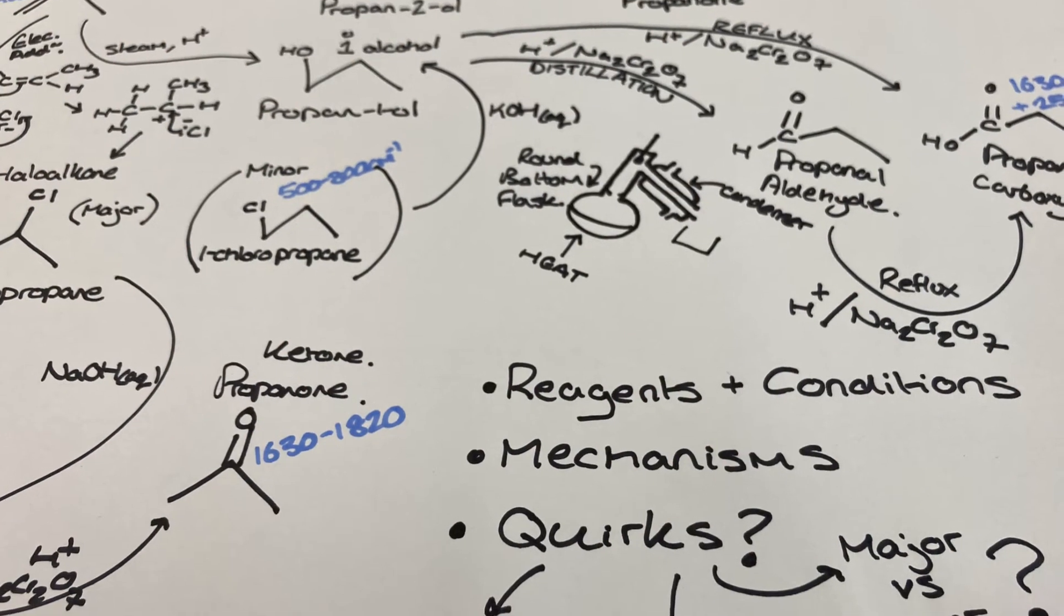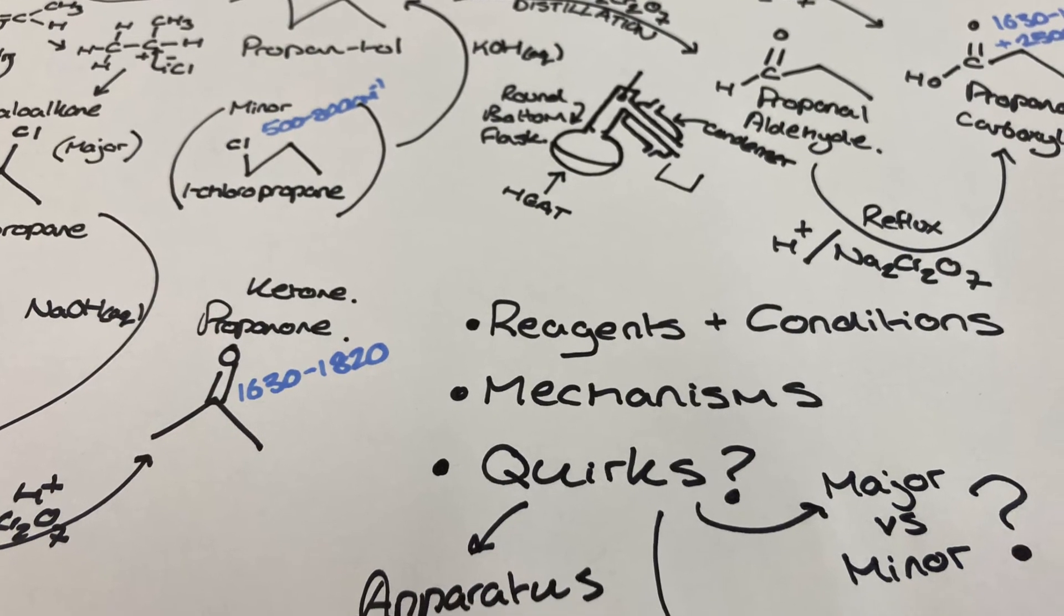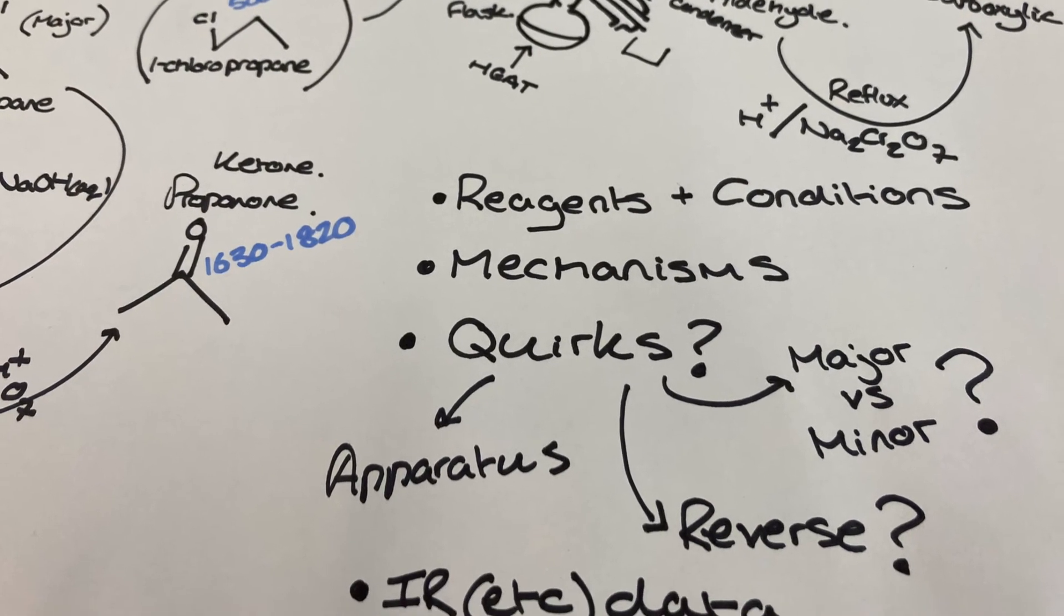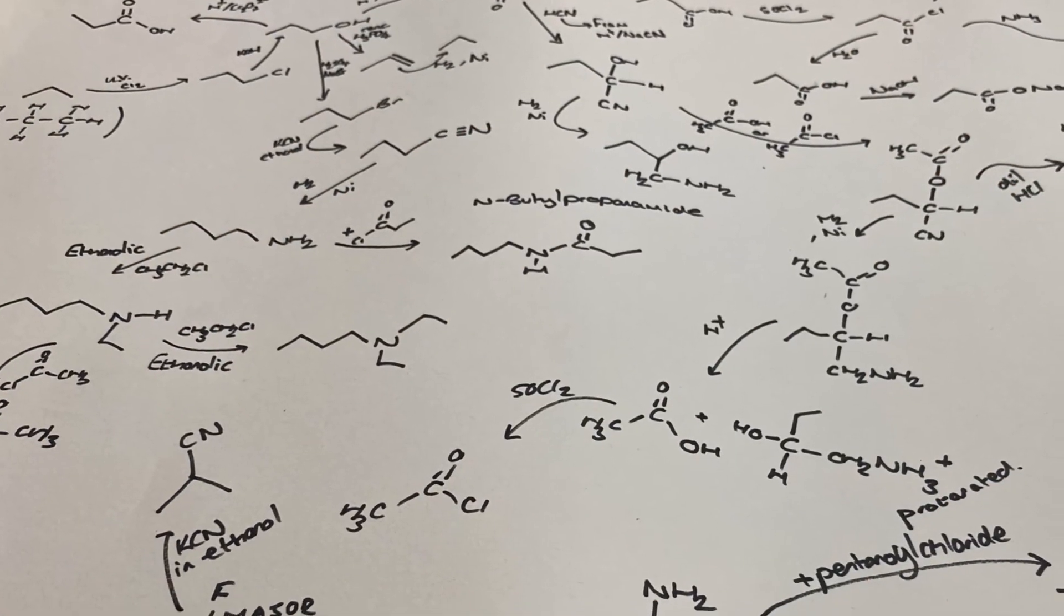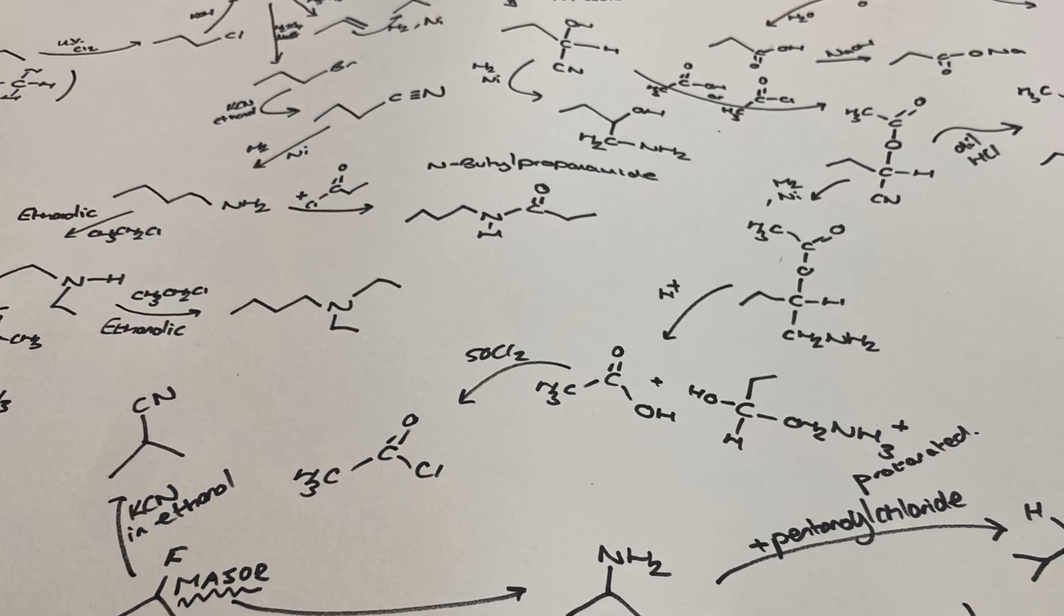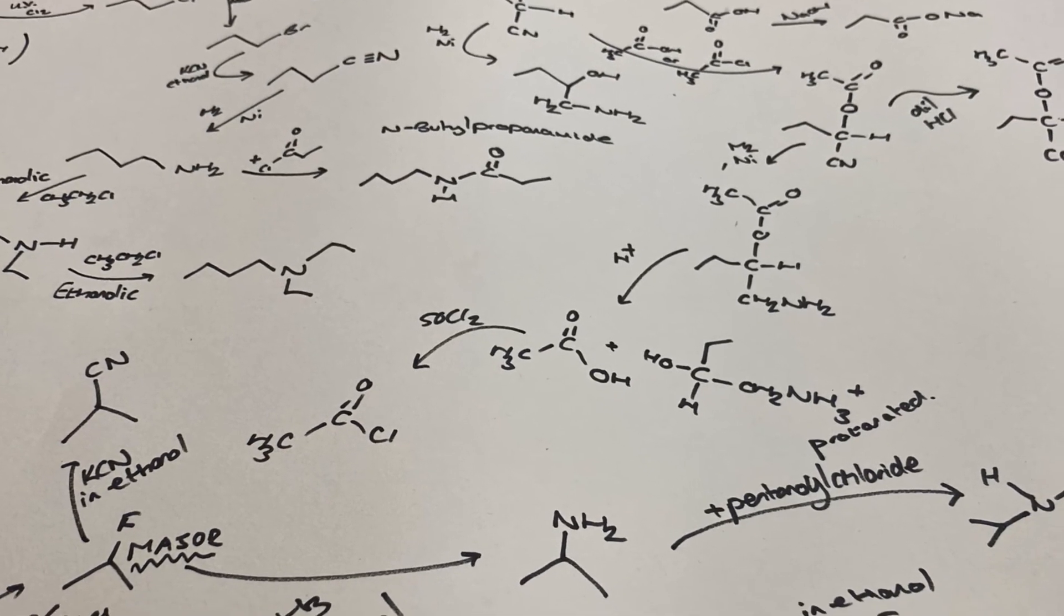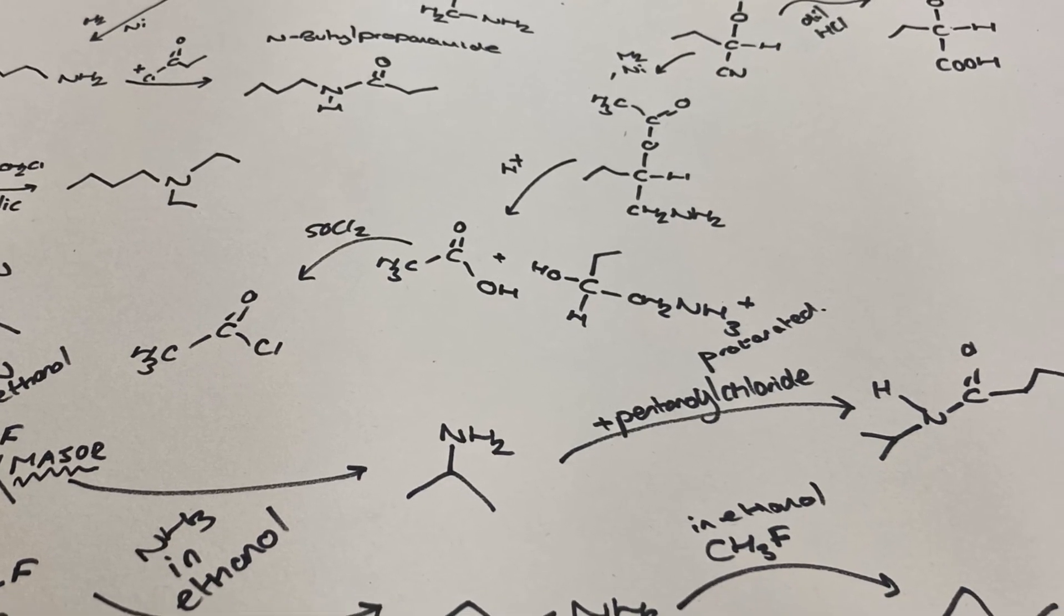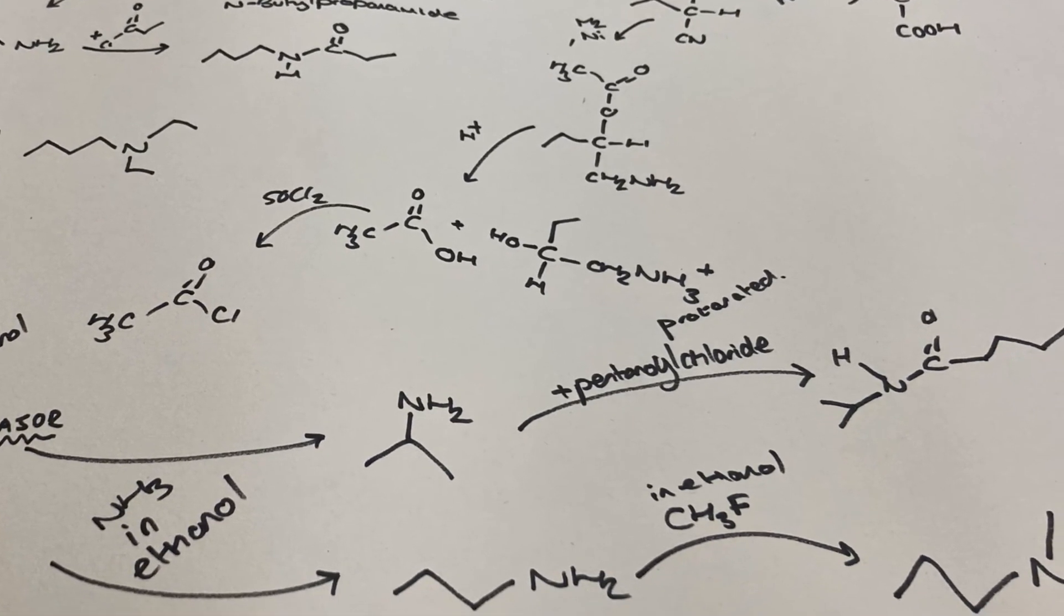Your finished product will be a robust map of all the different functional group changes that are possible. Once you think you've finished I would recommend making a record of each time you suggest a certain reaction on the page and then see if there are some reactions you are using less than others. This will help you stay self-aware whilst you're revising.